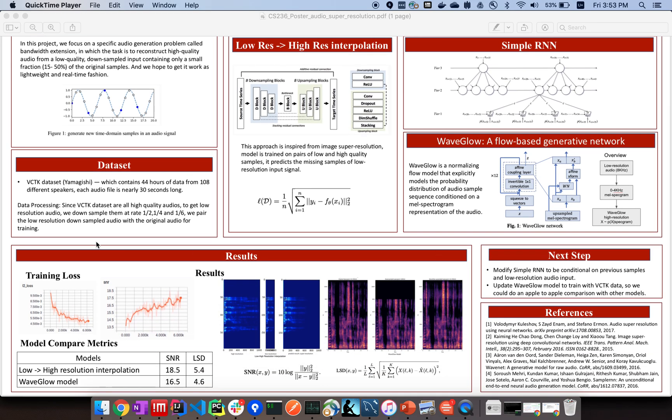But first, what is the dataset we use? We use VCTK dataset which contains 44 hours of data from 108 different speakers. Each audio is nearly 30 seconds long. But before training, we pre-process it because all these data are high-quality audios. In order to train, we have to downsample them at a rate about 1 to 2, 1 to 4, even 1 to 6. So we pair this low resolution downsampled audio with the original audio for training purposes.